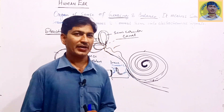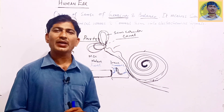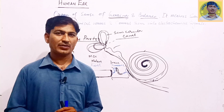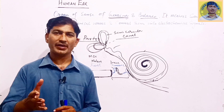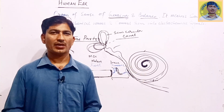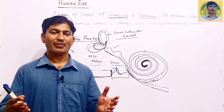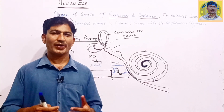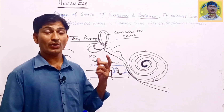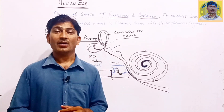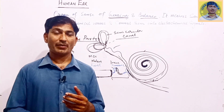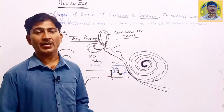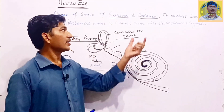First of all, let me define what the human ear is. The human ear is an organ of sense of hearing. It helps us to receive sound waves — mechanical waves. The beautiful sounds coming from our environment that we are receiving, listening to, and enjoying — all these beautiful sounds we can hear with the help of our ear. So the ear is an organ of hearing.